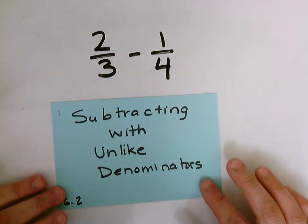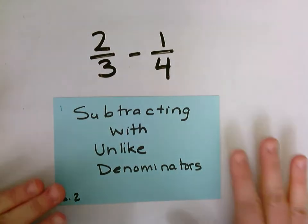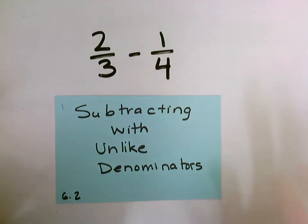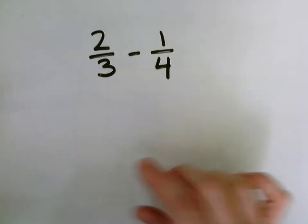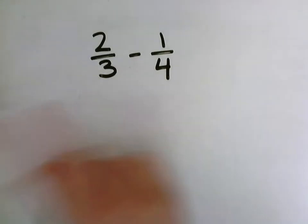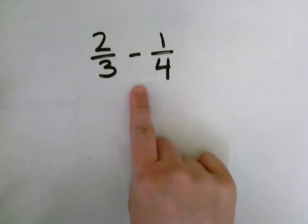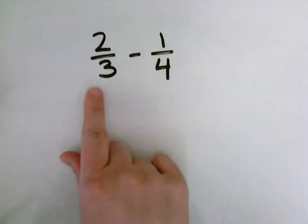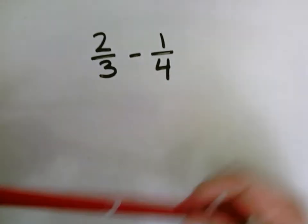Okay, just in case we need it, let's do one more example of subtracting with unlike denominators using our fraction tiles. So the problem that we're going to do is two-thirds minus one-fourth. So I have two-thirds of something. I'm going to take one-fourth of it away.